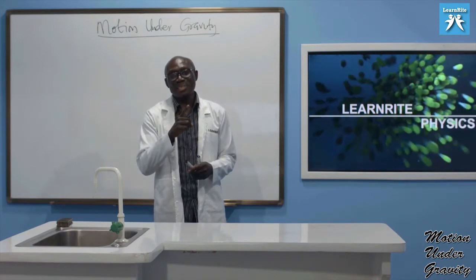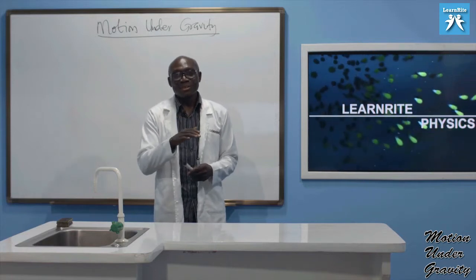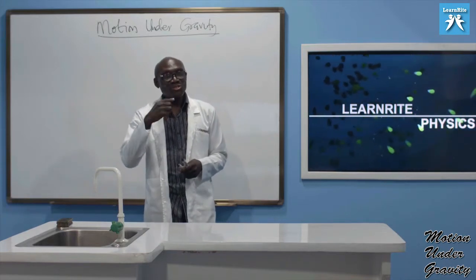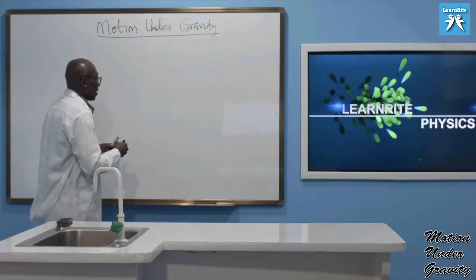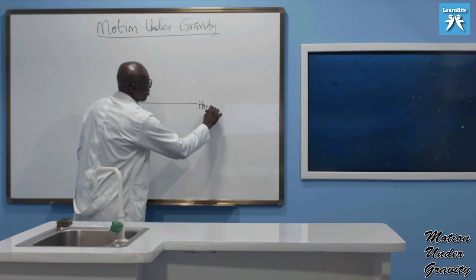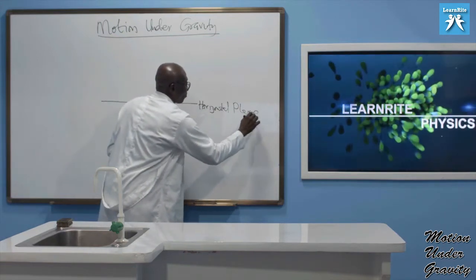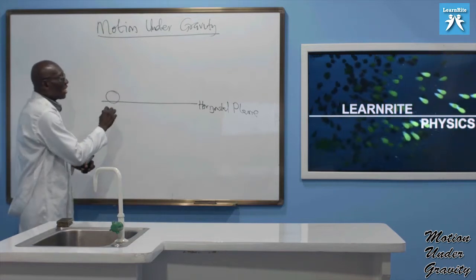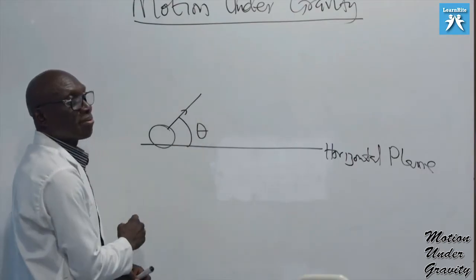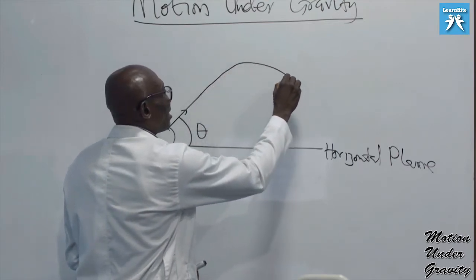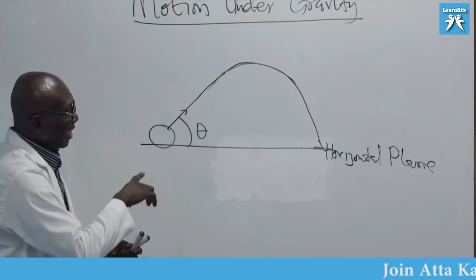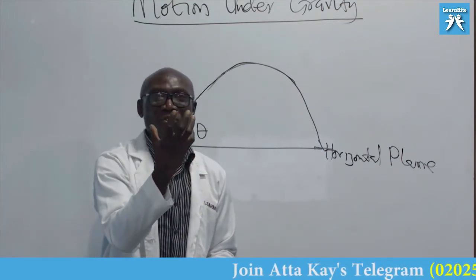A body at an angle to the horizontal — here I will just draw for you to see what I mean. I have this horizontal plane and I have this body that has been shot up at a certain angle to this horizontal plane. The body travels up, up, up and this is what we see — the body comes back, back, it comes back.